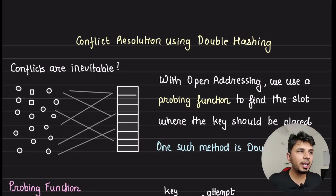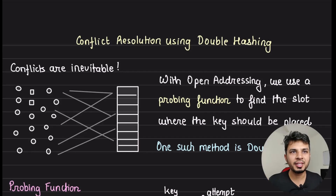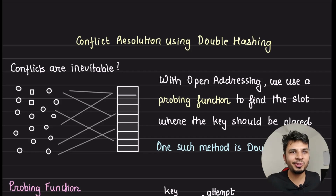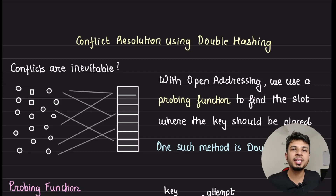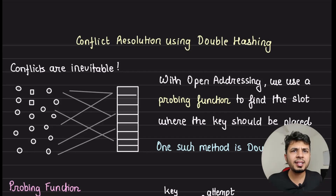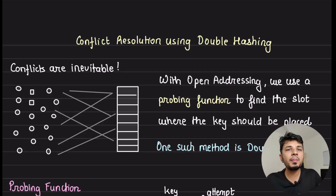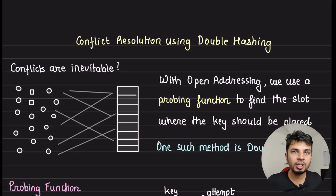In the previous videos we talked about linear probing and saw how good it is, but we learned that it suffers from clustered collisions. Then we spoke about quadratic probing and saw how it addresses the issue of clustered collisions. But can we do better? In this sixth video of the hash table internal series, we talk about the final technique of conflict resolution called double hashing.